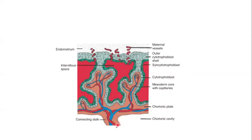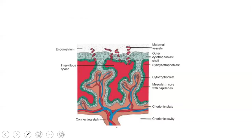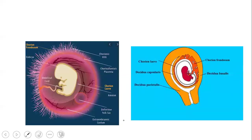We have discussed how circulation is slowly established: starting from trophoblastic lacuna, then sinusoidal communication, then angiogenesis in the villi forming tertiary villi, and simultaneously angiogenesis in the chorionic plate. The blood vessels in the villi, the chorionic plate, and the connecting stalk all communicate with each other, finally establishing circulation between the placenta and the embryo.